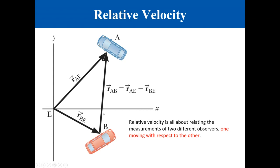This is the displacement vector between them. RAB equals RAE minus RBE. So this is the relative vector, that is to say B relative to A or A relative to B. This is how we calculate it from the original position vectors.